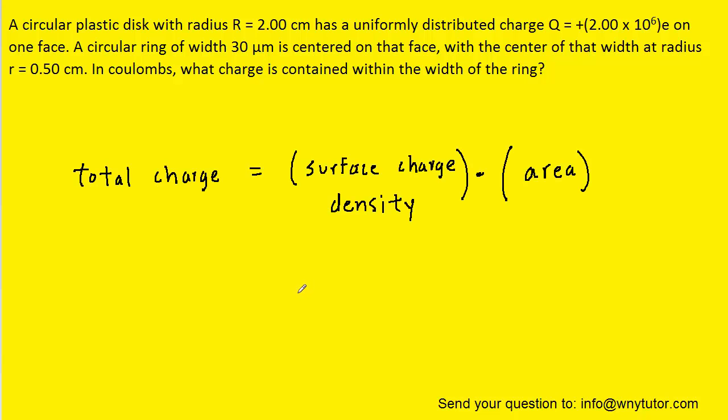According to that relationship, the total amount of charge is going to equal the surface charge density multiplied by the area. In symbolic form, we could say that the total charge Q is equal to sigma, which is the symbol we use for surface charge density, multiplied by the area A.